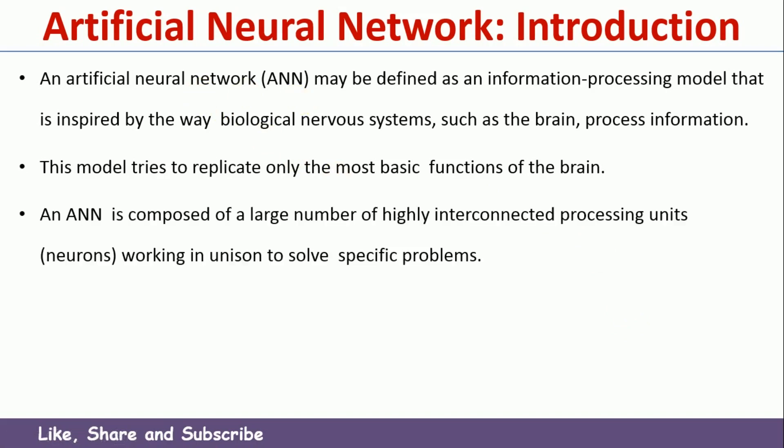An Artificial Neural Network is composed of a large number of highly interconnected processing units. Those processing units are called neurons, and those neurons are connected so that we can solve a particular problem.